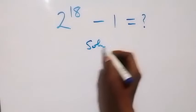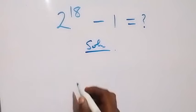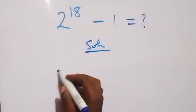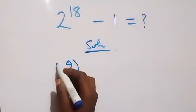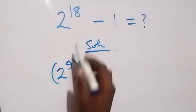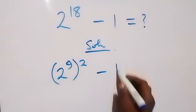Here, from what is given, you can rewrite 2 raised to power 18 as 2 raised to power 9, then raised to power 2. Here, 2 times 9 will still be 18, then minus 1.